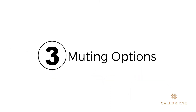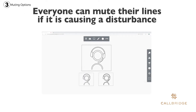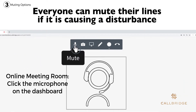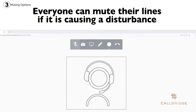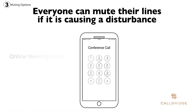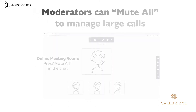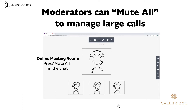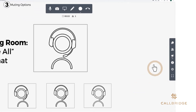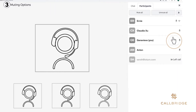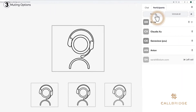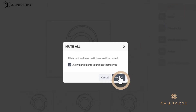Everyone has the possibility to mute their own line if it is causing a disturbance. In your online meeting room, you can click the microphone located on the dashboard. For mobile or landline callers, you can press star 6 to mute or unmute your line. If you're a moderator, you can use the mute all option. This is especially important for large calls. If you want to make sure there is no echo or disturbance while speaking to a large number of people, you can mute everybody until you get your point across.